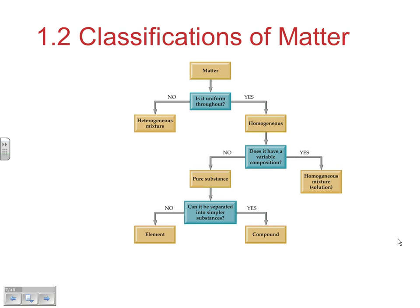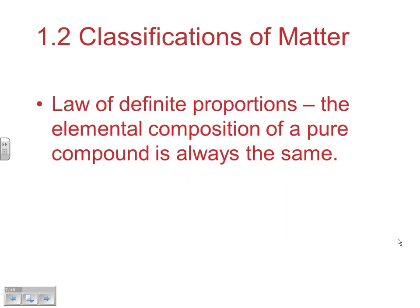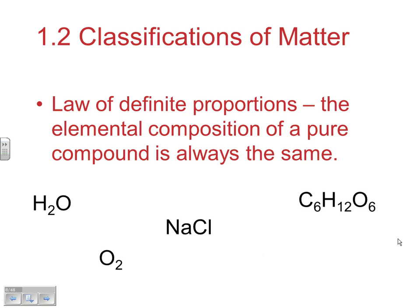One of the laws we'll look at in this first chapter is the law of definite proportions: the elemental composition of a pure compound is always the same. For example, the formula of water is always H₂O — always two hydrogens to one oxygen. It's a very simple and concrete law.